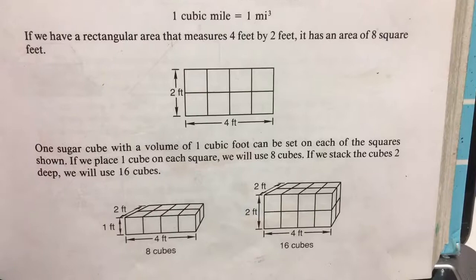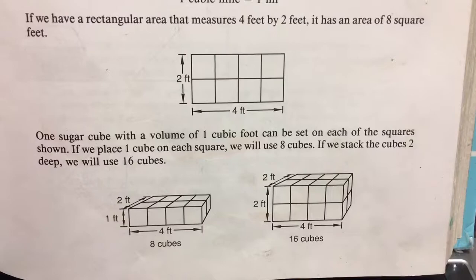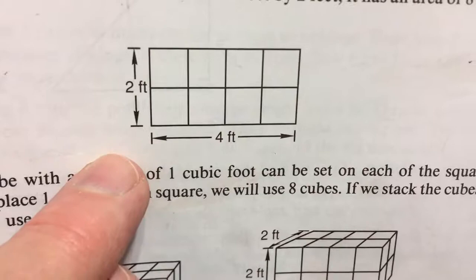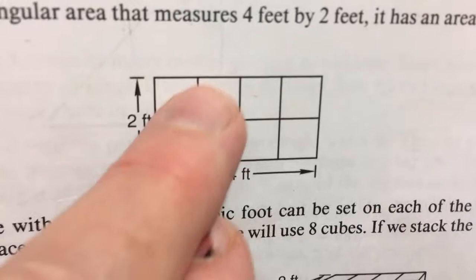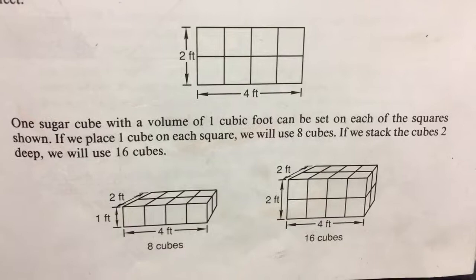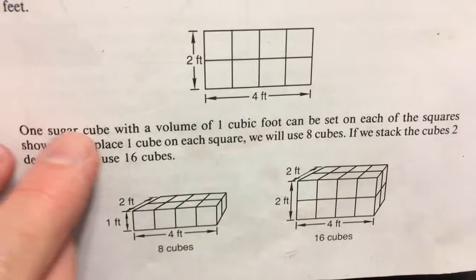Let's zoom in on our book for a minute. It says if we have a rectangular area that measures four feet by two feet, it has an area of eight square feet. Here they're showing you this figure — it is four feet this way and two feet this way. Four times two is eight square feet. Can you count them? One, two, three, four, five, six, seven, eight. Now they're using sugar cubes here, which is a good way to think of volume. One sugar cube with a volume of one cubic foot — now that would be a big sugar cube.